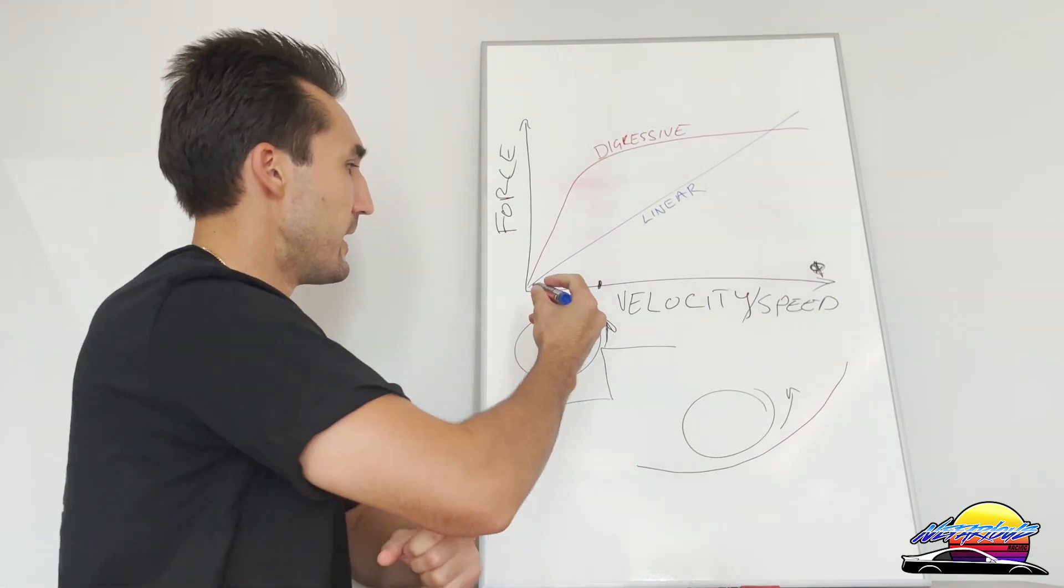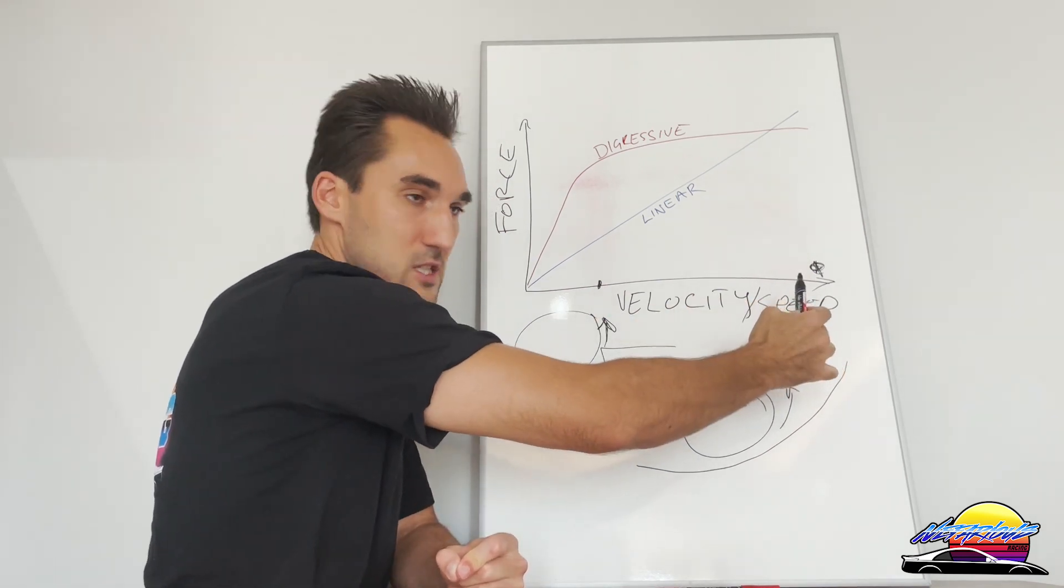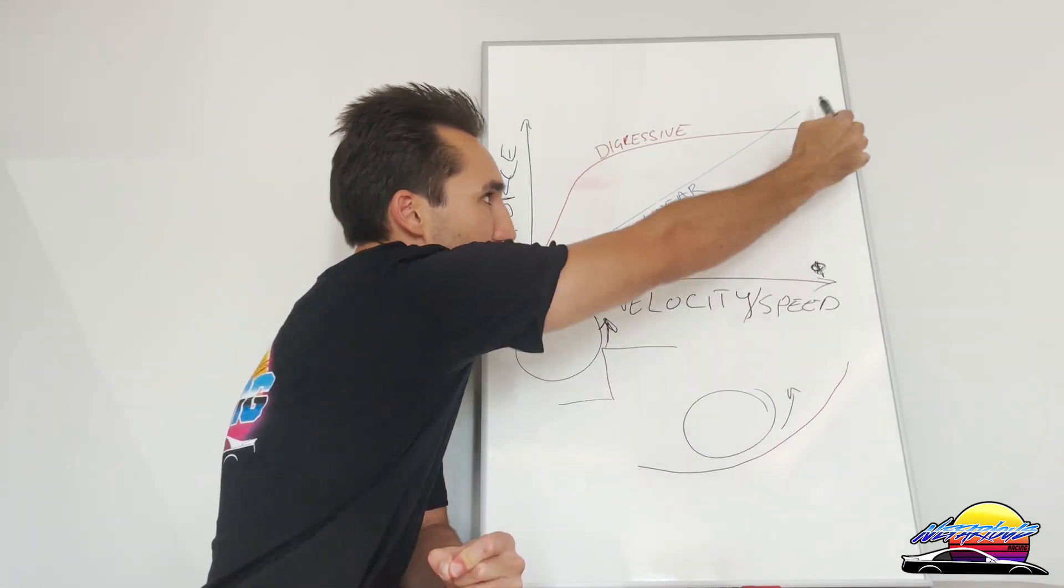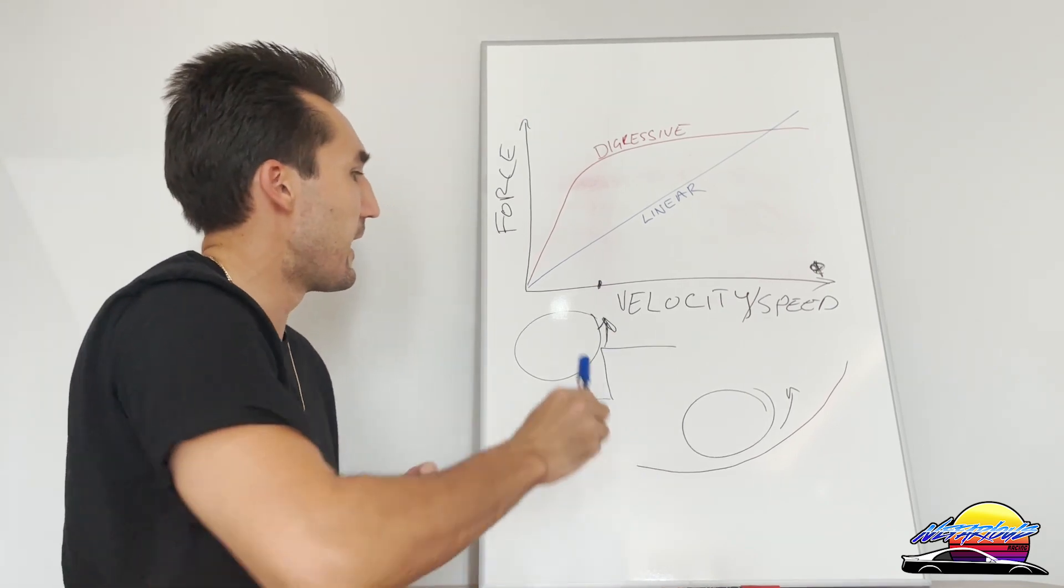Linear damping, which is the blue line, is what's called linear. It applies more force as velocity increases, and it increases equally as you go up. Obviously, the faster the piston speed gets, the more force is applied, and you get this very straight line.